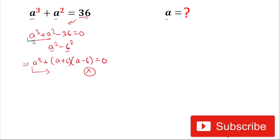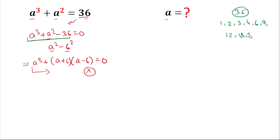Now, to find solutions we'll look for a common factor. For that, we need the factors of 36. The factors of 36 are: 1, 2, 3, 4, 6, 9, 12, 18, and 36 itself. We'll substitute each value of a to see which satisfies the expression. First, putting a = 1: we get 1 + 1 = 2, which does not satisfy the equation, so a = 1 does not work.